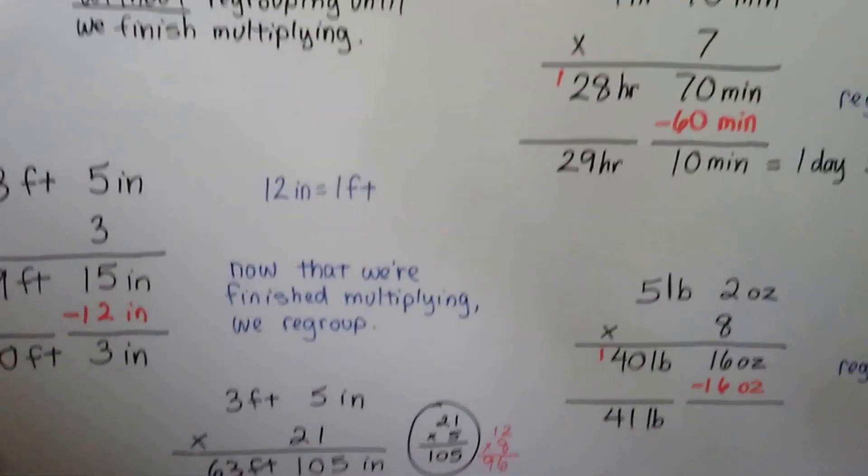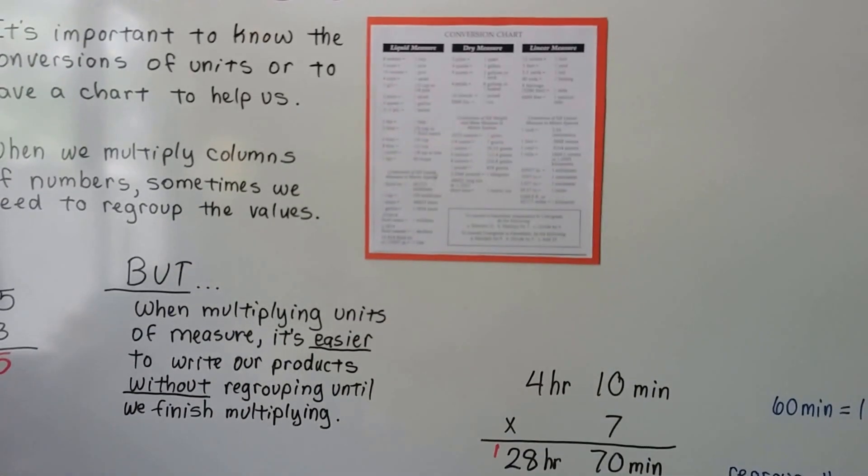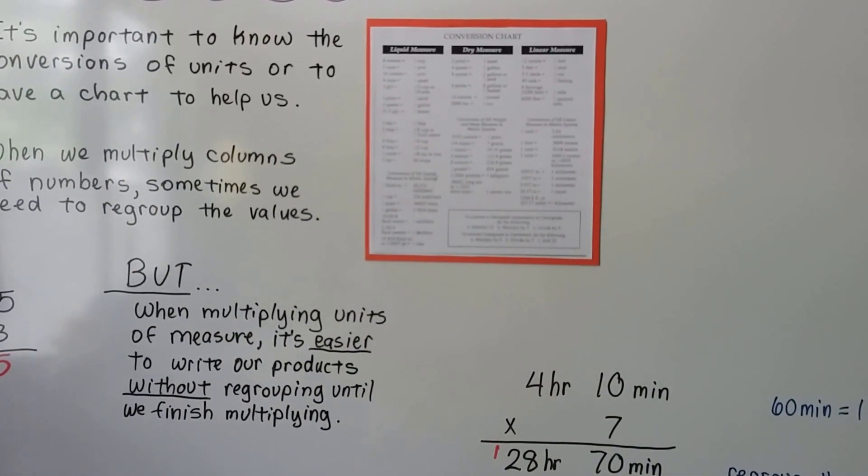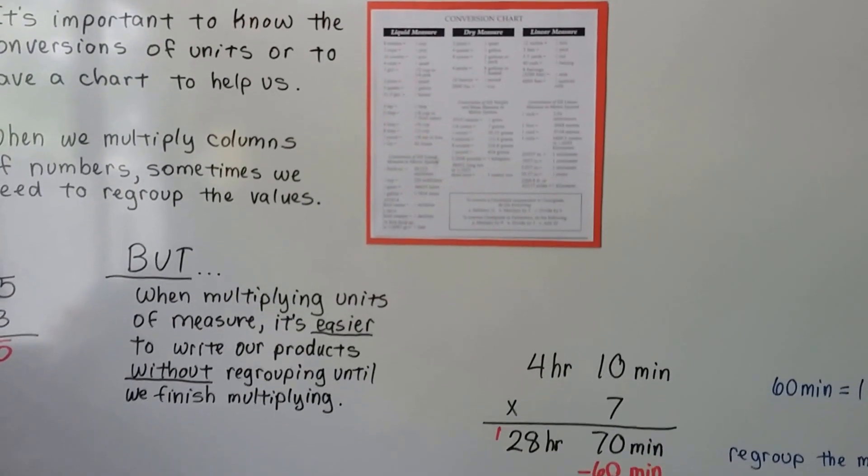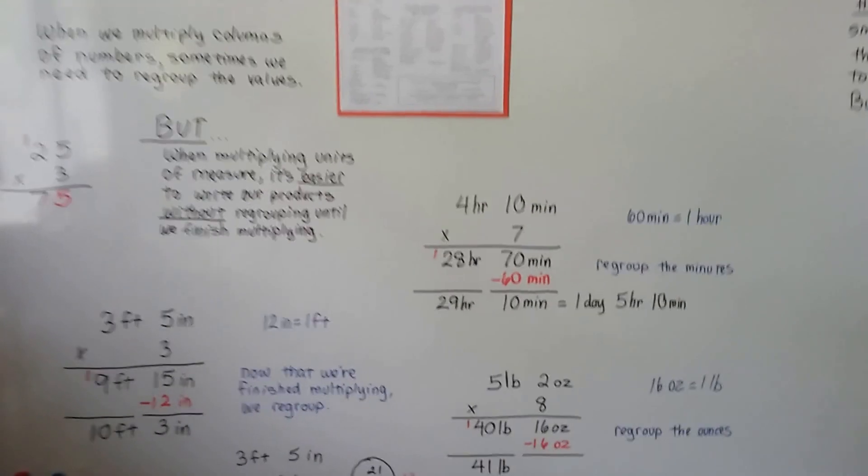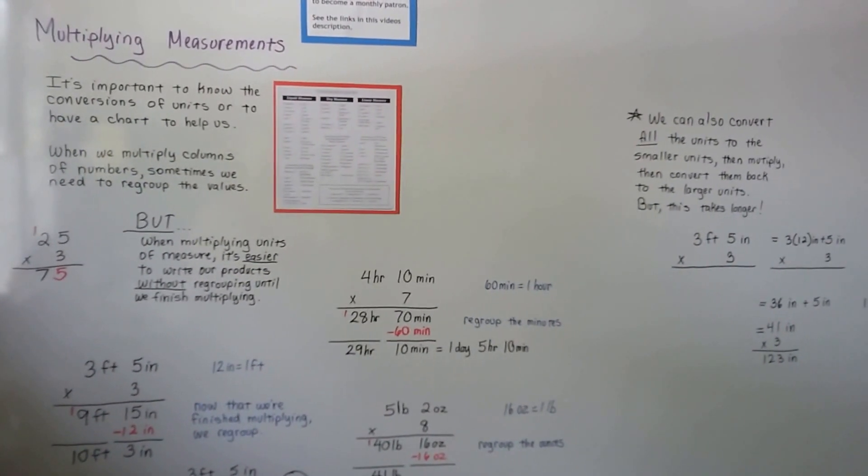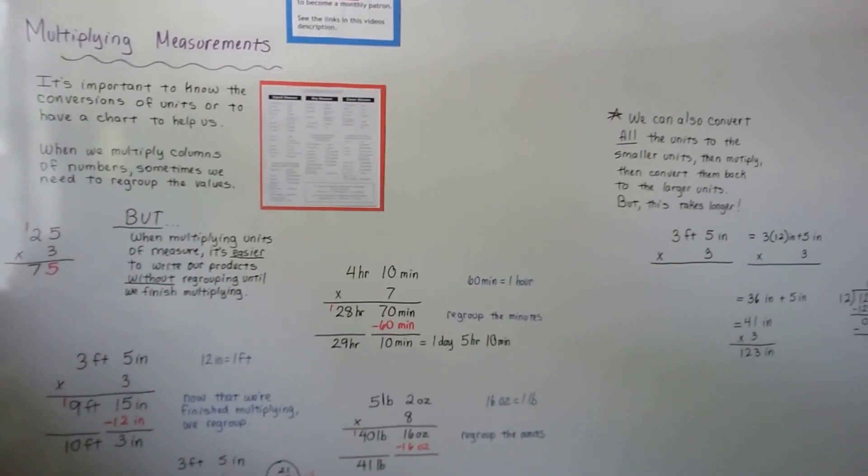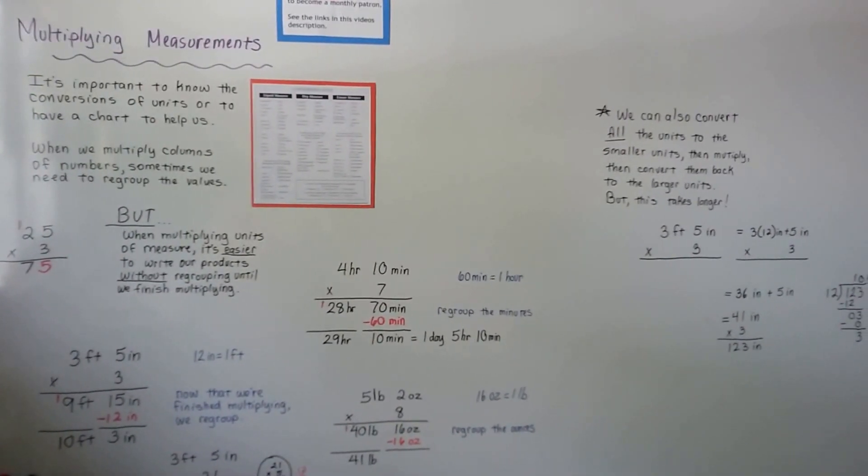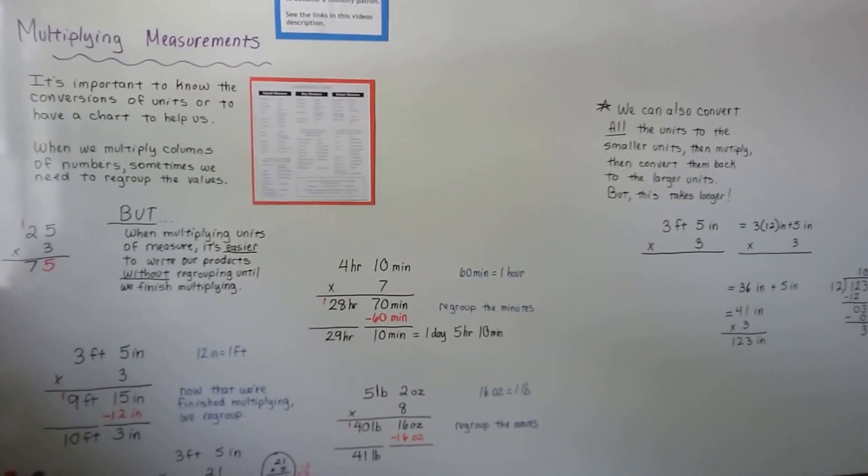So just get yourself a conversion chart and multiply all your units first, then convert them when you're finished. It's going to make it a lot easier for you. So that's multiplying measurements. If you're following me, we're going to talk about dividing measurements. And check this video's description because I usually have helpful links to other videos. I'll see you later. Bye.